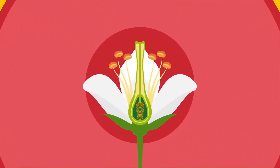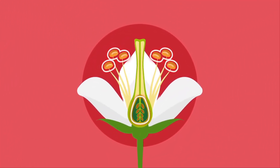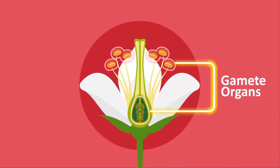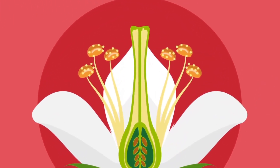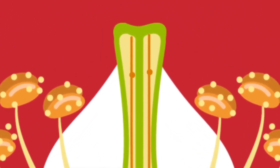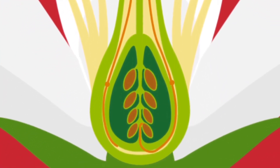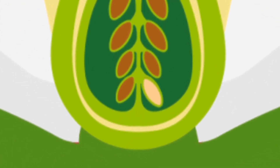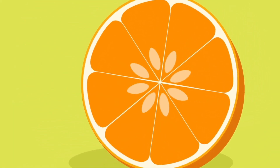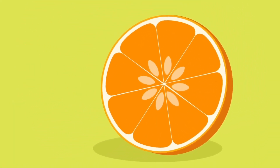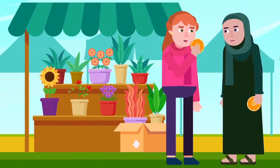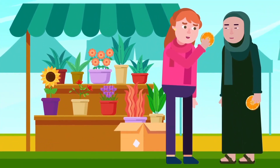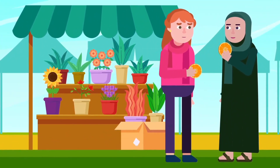In flowering plants, sexual reproduction involves the fusion of special cells called gametes. There are special mechanisms like pollination and fertilization to ensure that male and female gametes meet. Seeds grow to become a new plant. Seeds are found in fruit, and each fruit is produced by a flower. The flower is the specialized shoot which bears the reproductive organs in flowering plants.